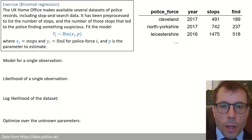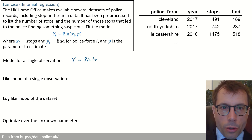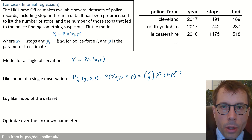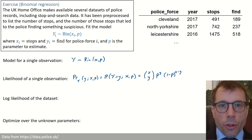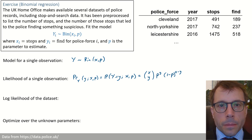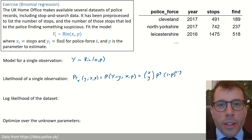The steps are exactly the same as always. First, we write down the model for a single observation — exactly what the question told us. Next, we write down the likelihood function. Y is a discrete random variable, so the likelihood of little y is just the probability that big Y equals little y. You can look up the probability mass function for a binomial online — but remember, don't just copy out the formula blindly. Translate it to the parameters we have here, x and p.